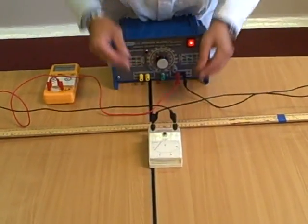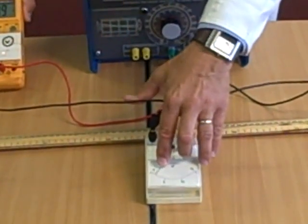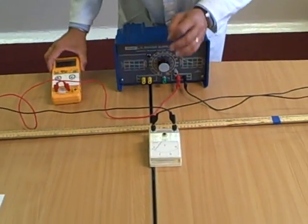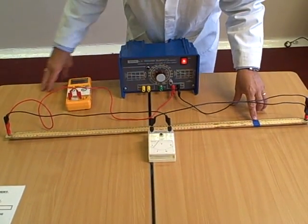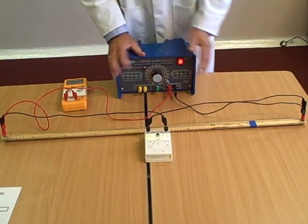Now, what you have to record is, what number is on here, and what number is on here. And you've got to do that for the three different colored meter rules, which are three different thicknesses.